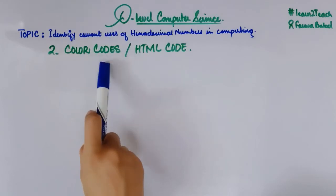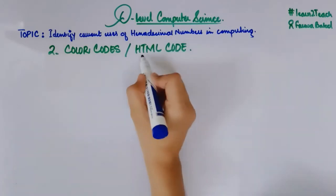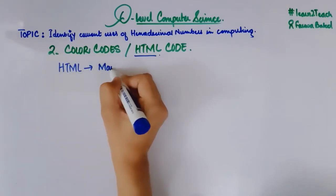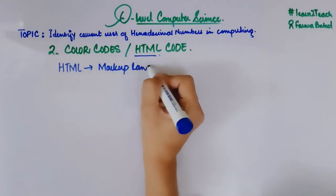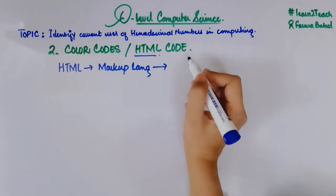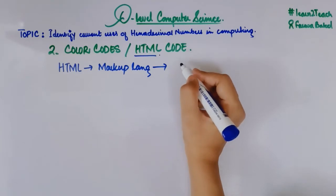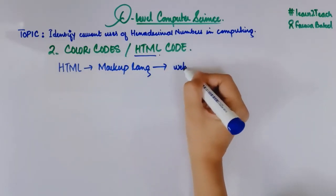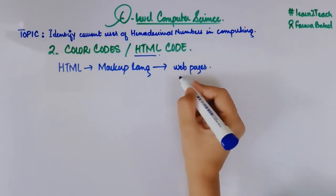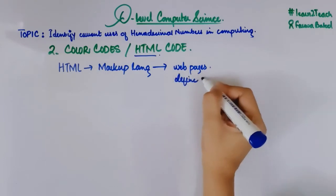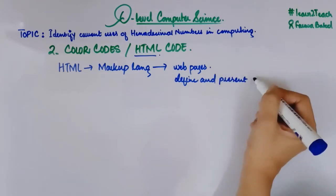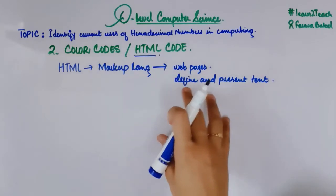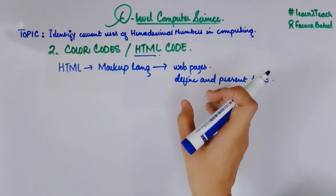What is HTML? HTML is basically Hypertext Markup Language. It is a markup language that is used to define, process, and present text in web pages. It is not a programming language — you are not doing programming here — but you are manipulating text and presenting it in a suitable manner.